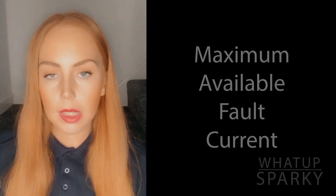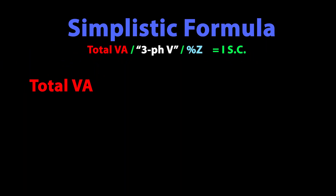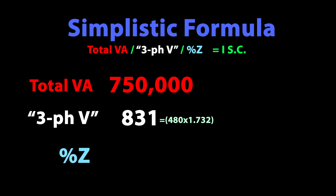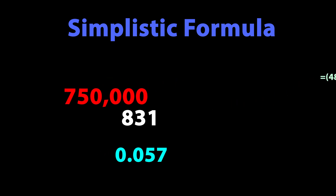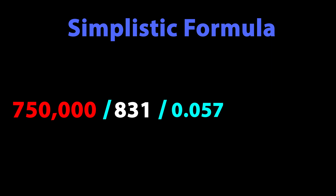Charlotte shows us the formula: for maximum available fault current from a transformer using three-phase, you need three numbers. First, total VA — in this case 750,000. Second, secondary voltage adjusted for three-phase: 831. Third, the transformer impedance — 5.7%, written as 0.057. The formula: 750,000 VA ÷ 831 ÷ 0.057 = approximately 15,833 amps — that's the conservative maximum available fault current on the secondary side. And it truly is a simple formula.